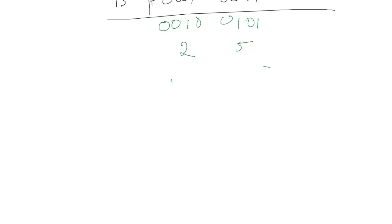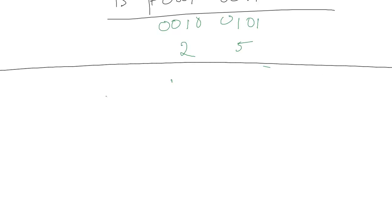Let's do one more example. Let's do 997 plus 114. Solving this first: 7 plus 4 is 11, carry 1; 9 plus 1 plus 1 is 11, carry 1; 9 plus 1 plus 1 is 11, carry 1. So the answer is 1,111. Now let's write this out in BCD and try to solve it the same way.